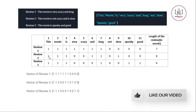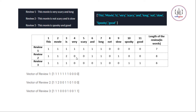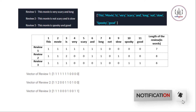Similarly for Review 2: 'this', 'movie' are marked as one. 'Is' appears twice in Review 2 — once after 'movie' and once after 'and' — so it gets a value of one plus one, which equals two. 'Very' is absent so it is marked as zero, and 'scary' is also marked as zero. We do this for all the reviews.